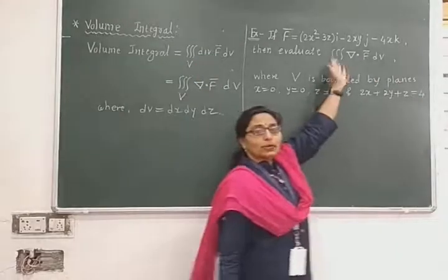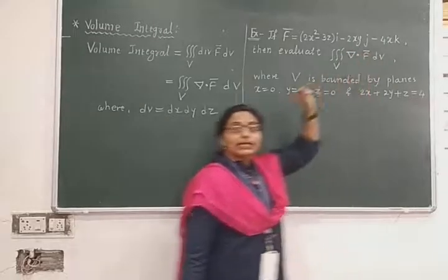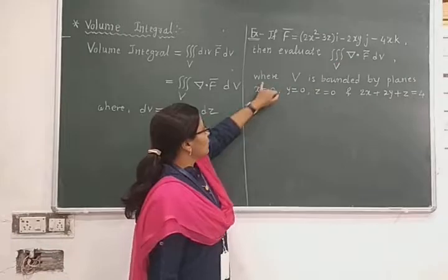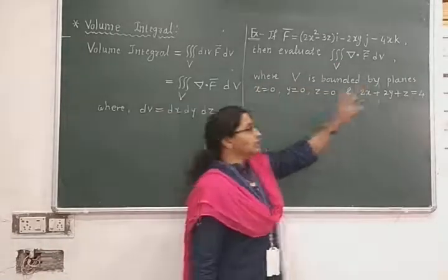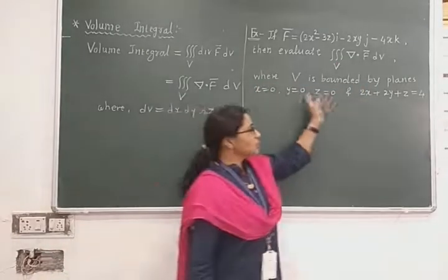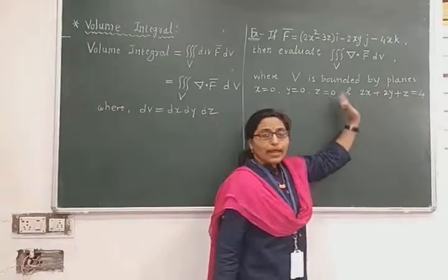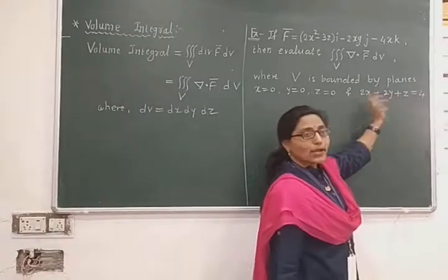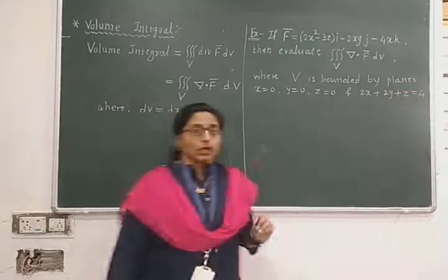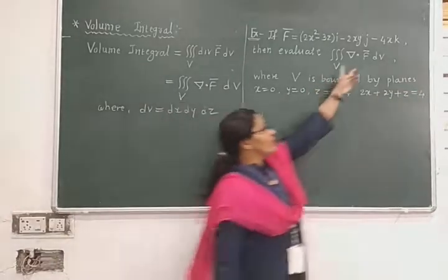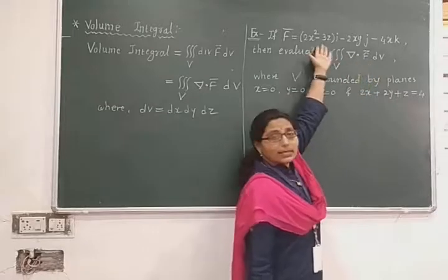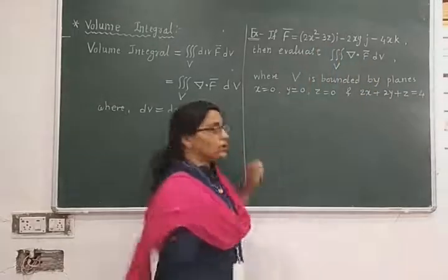So here we are going to evaluate this triple integration. Here V is bounded by the planes: x equals to 0, y equals to 0, z equals to 0, and the plane 2x + 2y + z equals to 4.